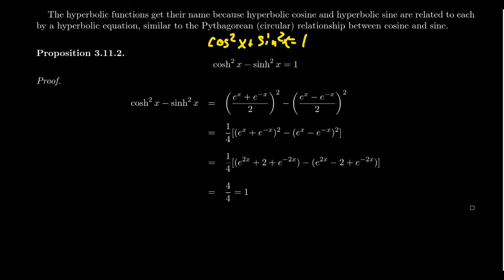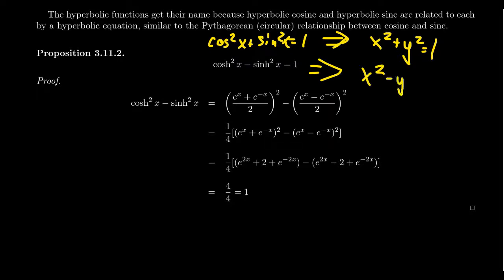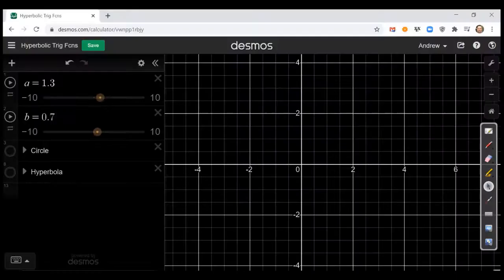Coming back to the Pythagorean equation for circular trigonometry — cosine squared plus sine squared equals 1 — this is just taking a parameterization of the unit circle x² + y² = 1. On the other hand, the hyperbolic functions give us a parameterization of the unit hyperbola x² - y² = 1.